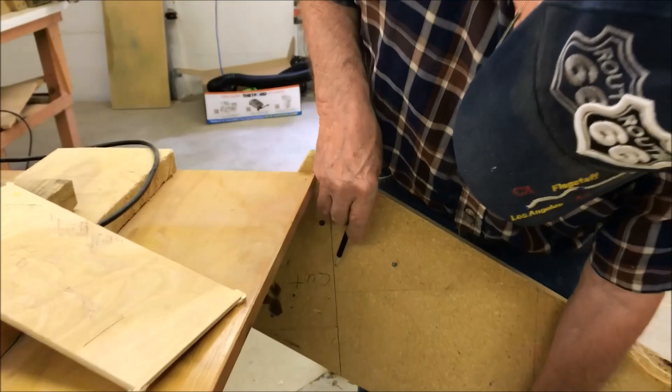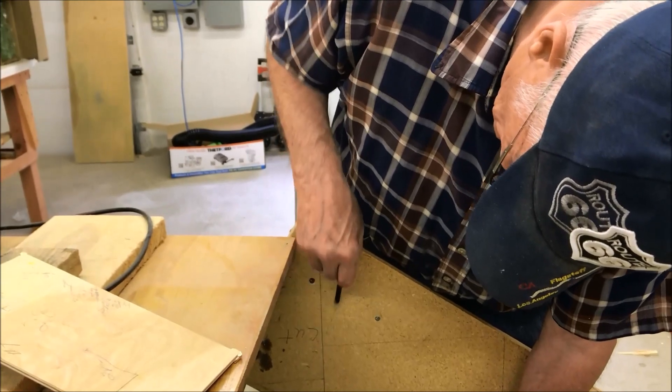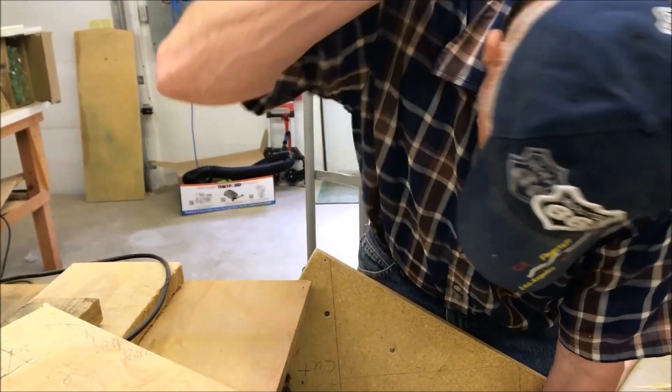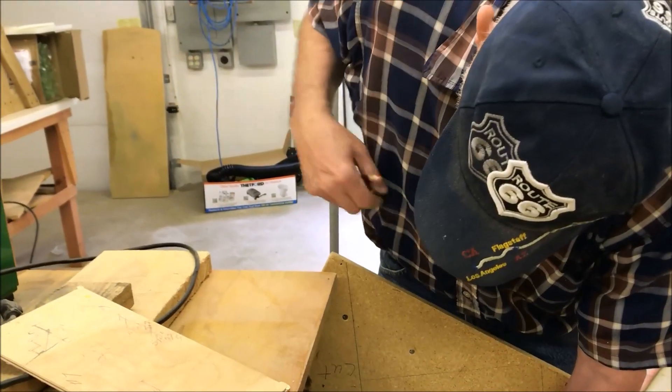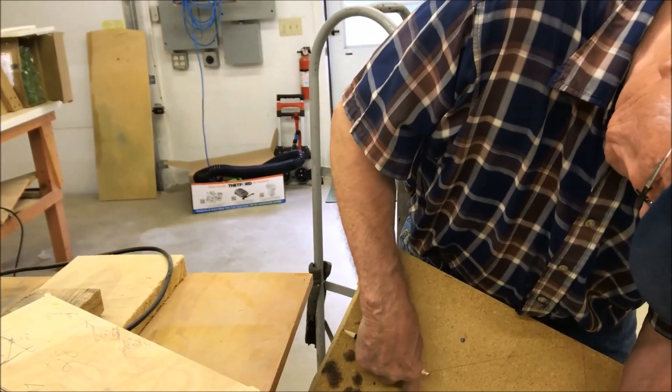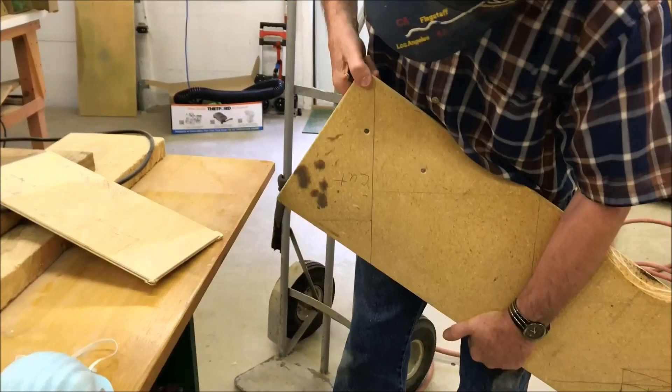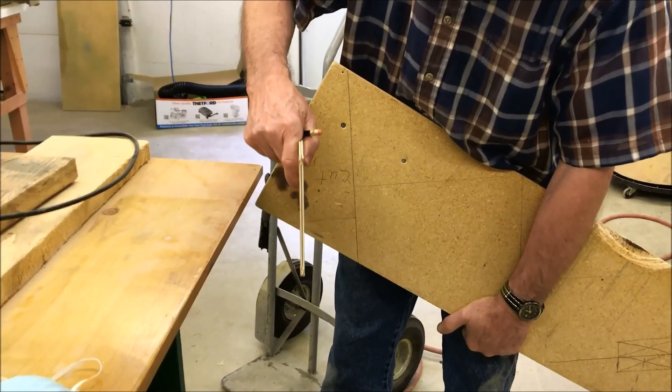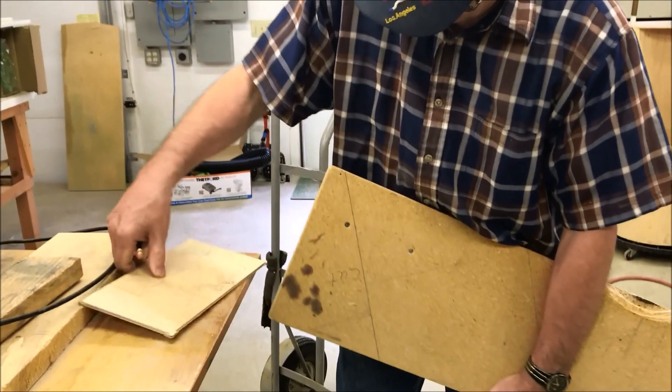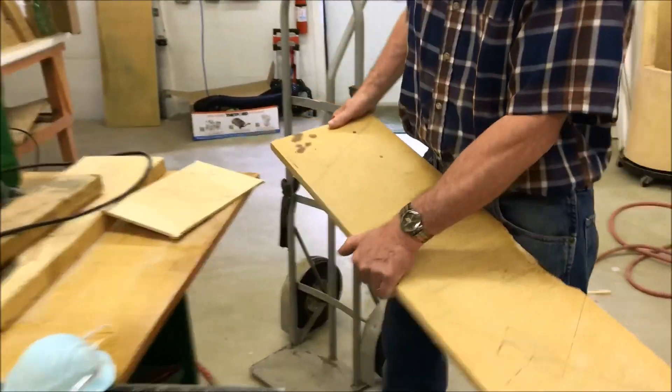You might want to cut something out of here to put a two-by-four into it so you can fasten it to the rib. Or you might want to go like this and cut it out so it fastens up underneath this rib joist. Yep. Okay. Piece of cake.